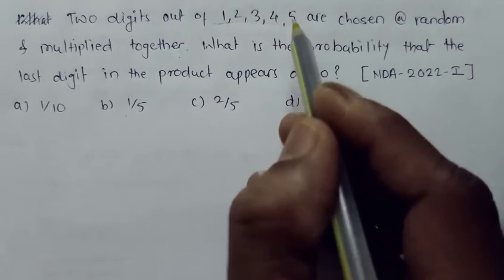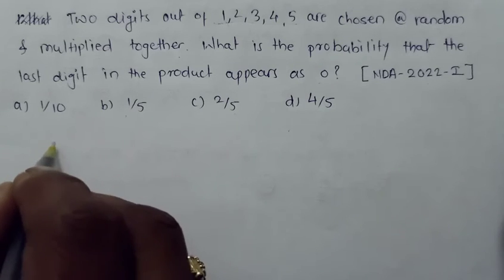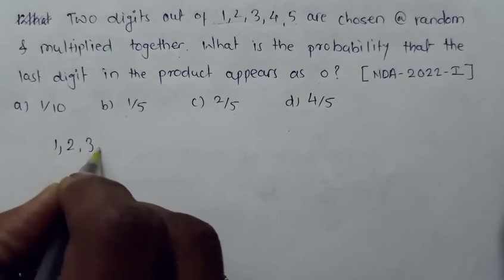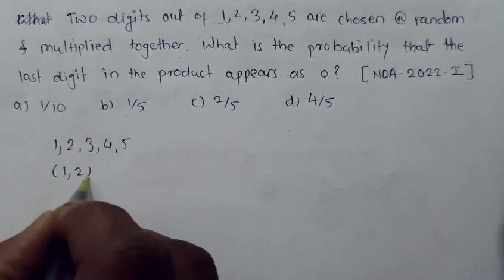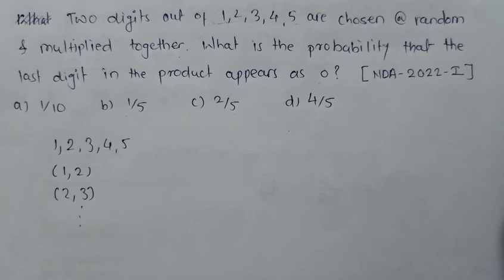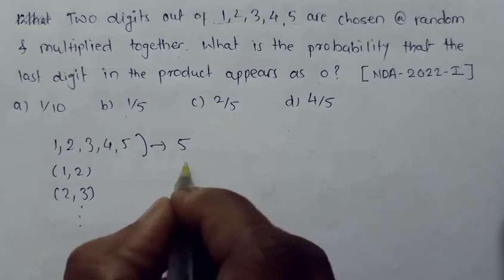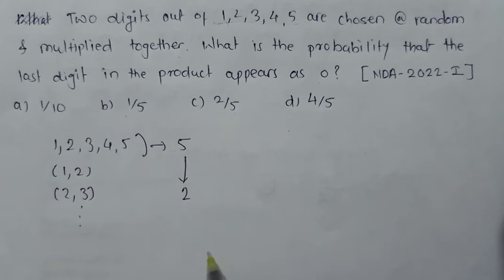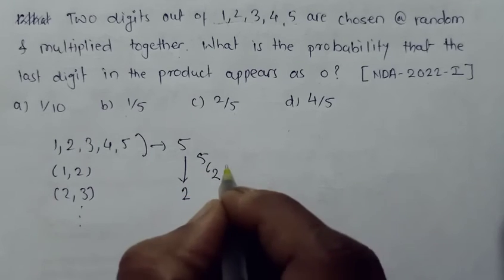Out of 1, 2, 3, 4, 5, I have to choose two numbers. The numbers can be (1,2), (2,3), and so on. In how many ways can we do this? Out of all five digits, I want to select two digits.